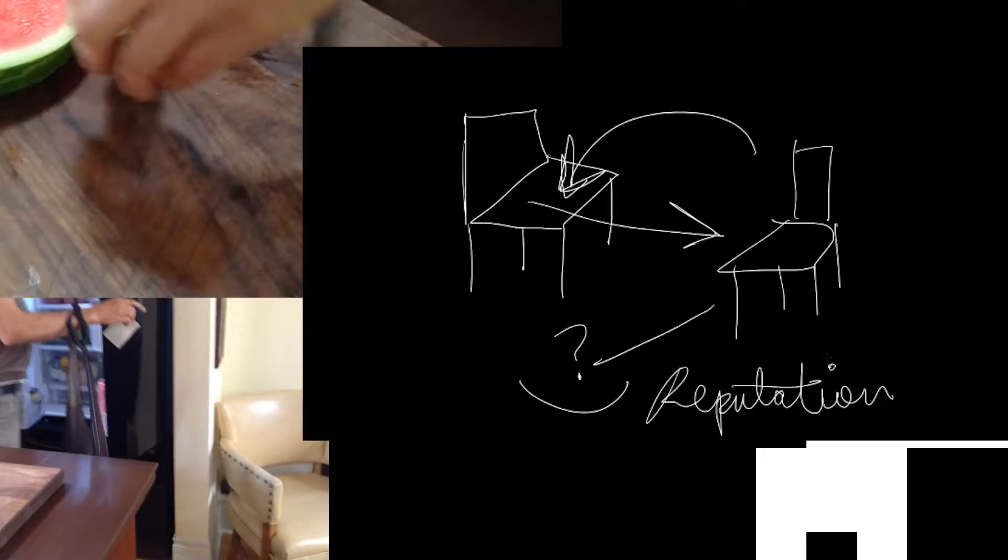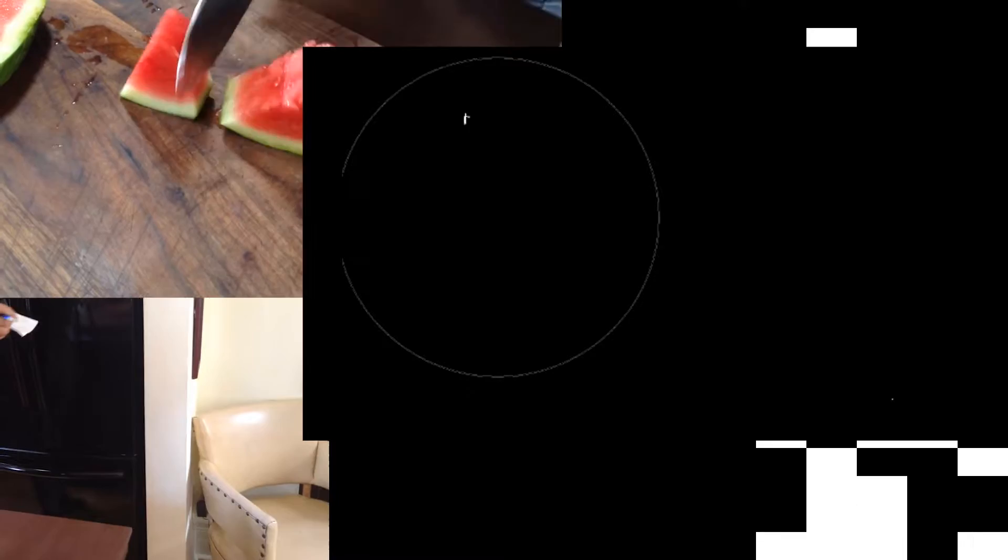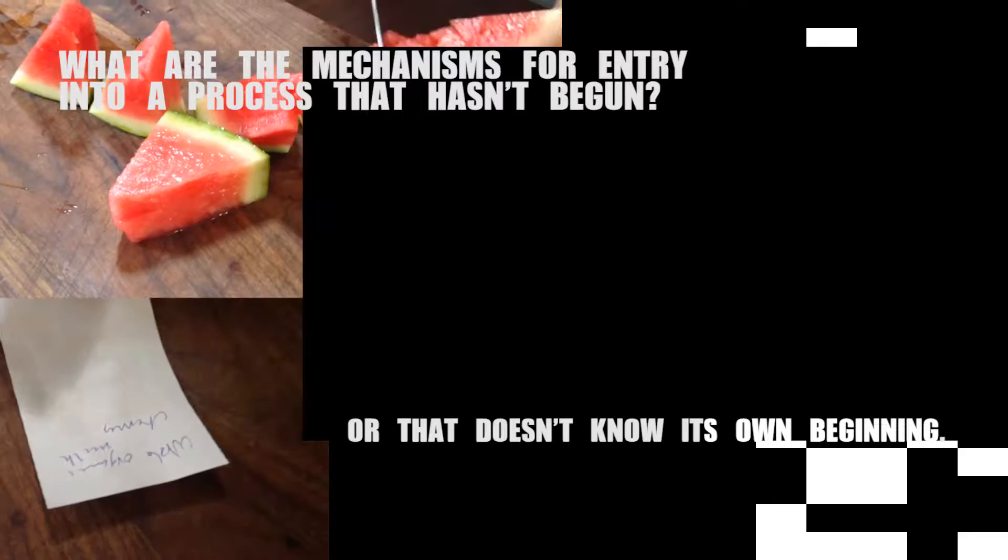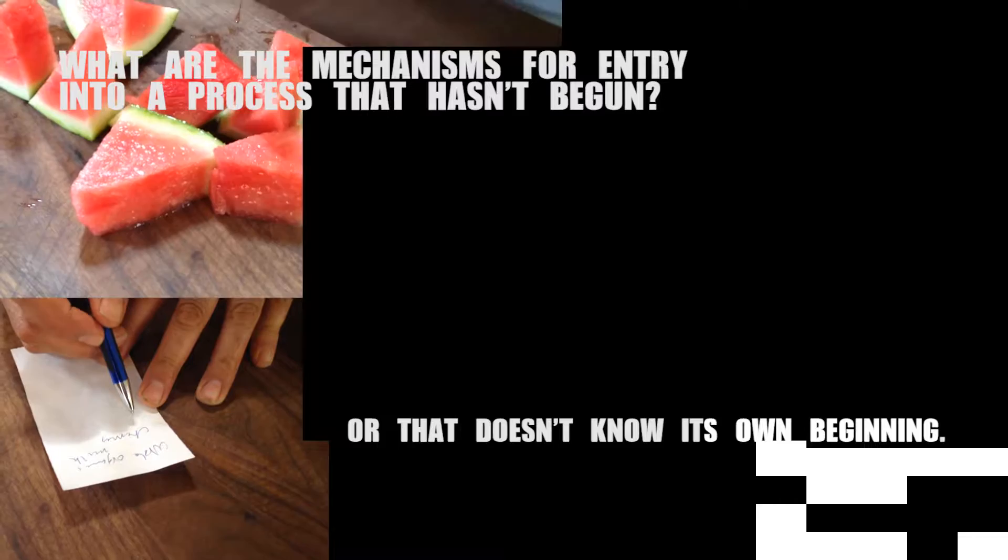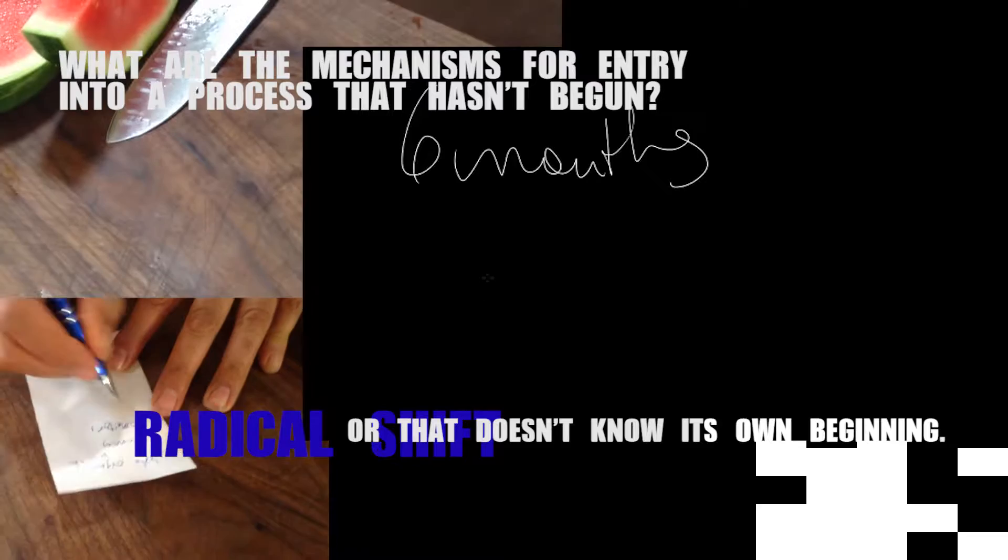What was your questionnaire when you said what are the mechanisms for entry into a process that hasn't begun or that doesn't know its own beginning? And particularly the question of, intermittently maybe every six months or every year there's a radical shift that happens and there was a radical shift after the neurodiversity event.